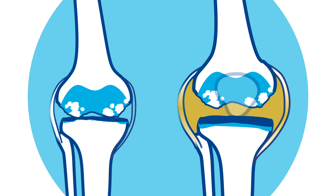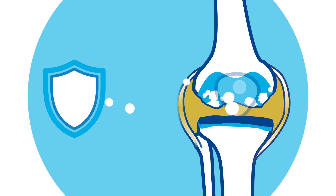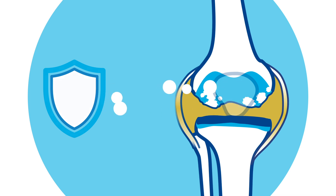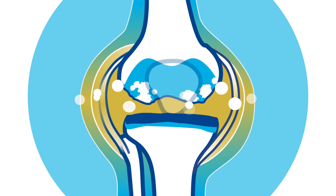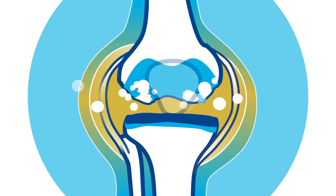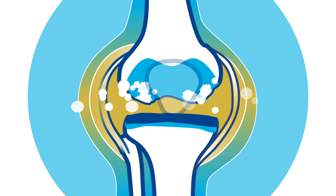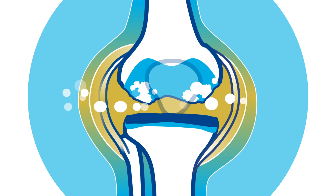Osteoarthritis is also different from rheumatoid arthritis. Rheumatoid arthritis is an autoimmune condition in which your immune system mistakenly attacks your own body's tissues. Unlike osteoarthritis, rheumatoid arthritis affects the lining of your joints, causing a painful swelling that can lead to bone erosion and joint deformity. It can also affect tissues beyond the joints.